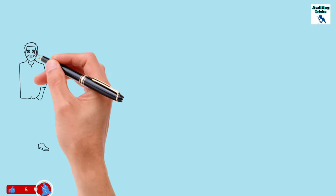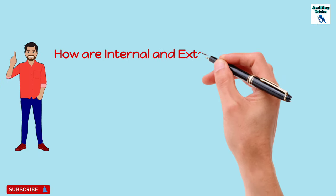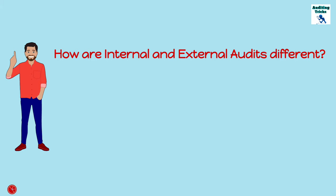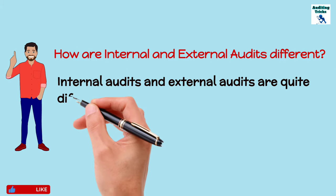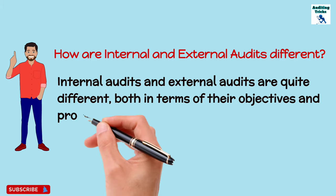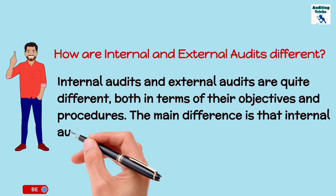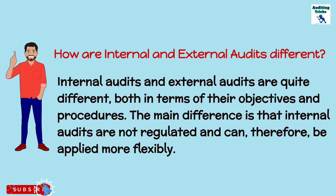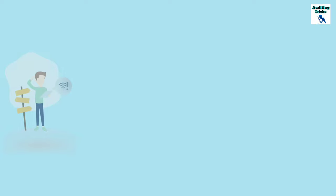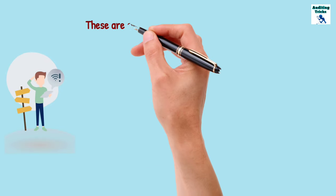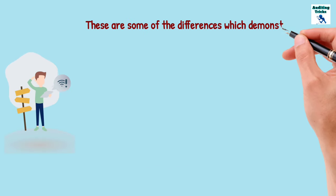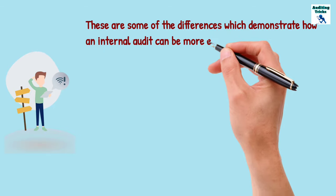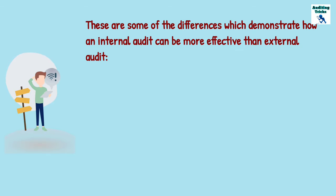Now let's see how internal and external audits differ from each other. Internal audits and external audits are quite different, both in terms of their objectives and procedures. The main difference is that internal audits are not regulated and can therefore be applied with more flexibility. Here are some of the differences which demonstrate how an internal audit can be more effective than the external audit.